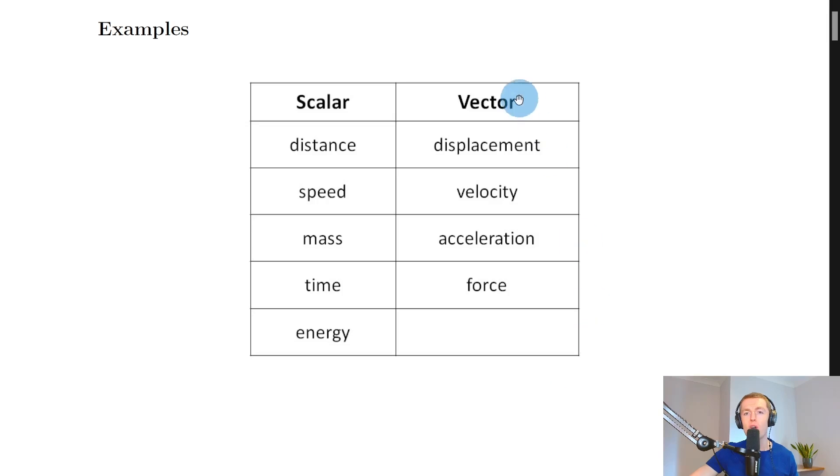And lastly, one that's not on the list here for vectors would be weight. And remember, weight is a type of force. It's the force acting downwards on an object due to gravity. So if force is a vector, then weight must also be a vector.